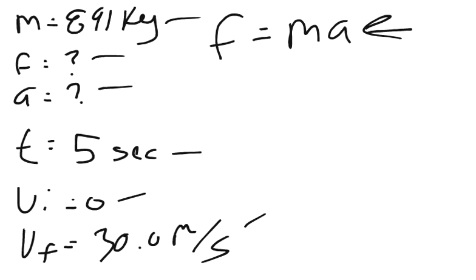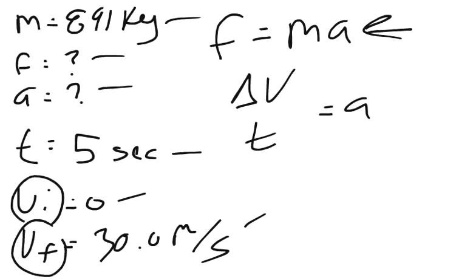I'll start with the definition of acceleration, which is the change of velocity over time. By change of velocity, I'm talking about the final velocity minus the initial velocity. In our case, the initial velocity is zero, so the change of velocity will be equal to the final velocity in this situation.